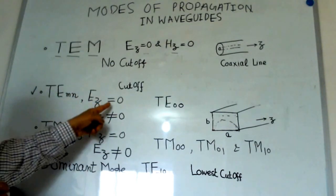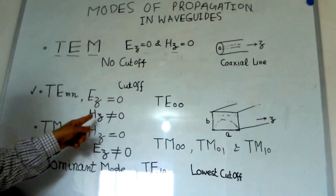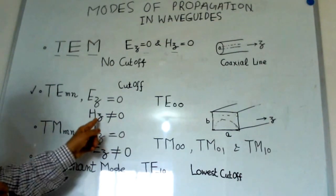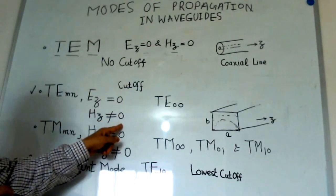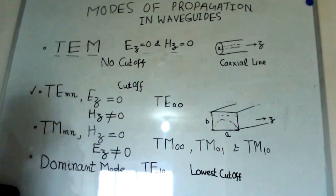Here Ez is zero. Electric field is not in the direction of propagation, but the magnetic field could be in the direction of propagation. That is why I am indicating here Hz is non-zero in the case of TEmn mode.